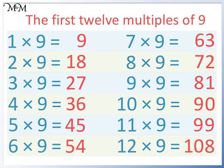We can see a pattern which helps us to remember these multiples. The digits of the answers of the first 10 multiples of 9 add to make 9. 1 plus 8 equals 9, 2 plus 7 equals 9, 3 plus 6 equals 9, 4 plus 5 equals 9, 5 plus 4 equals 9, 6 plus 3 equals 9, 7 plus 2 equals 9, 8 plus 1 equals 9, and 9 plus 0 equals 9.